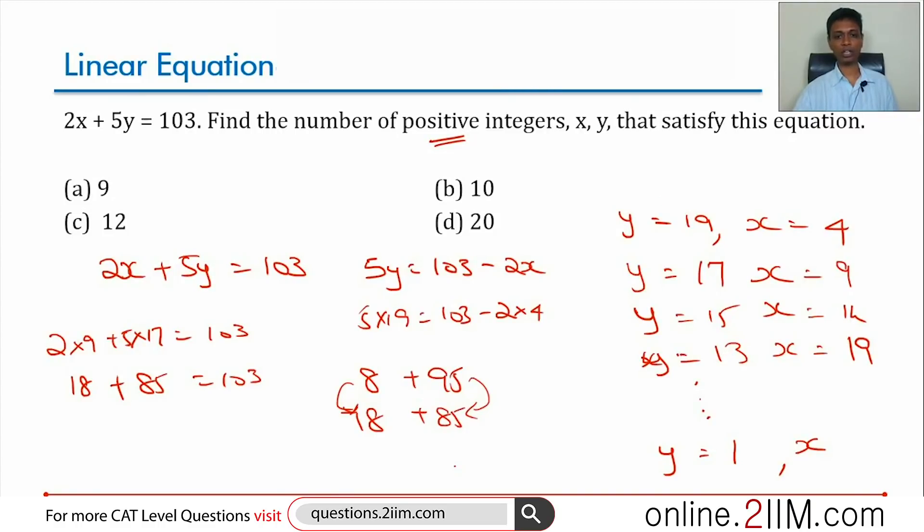We are effectively counting 1, 3, 5, 7, 9, all the way till 19. So this is nothing but 2, 4, 6, 8, 10, all the way till 20, minus 1 each. So 10 multiples of 2 minus 1. There are 10 sets of positive integers that satisfy this equation.